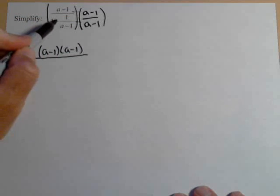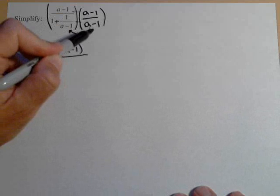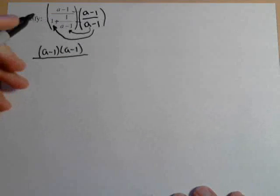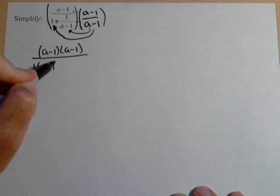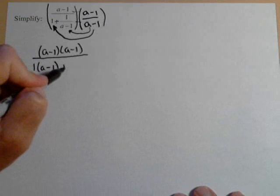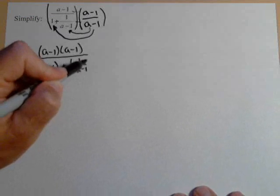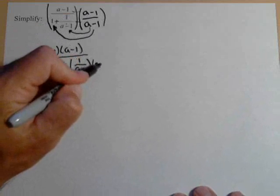On the bottom, you have to be careful. Because of this plus, this a minus 1 must be distributed to both of these. So we're going to have 1 times a minus 1 plus, now here we have the 1 over a minus 1 from the original problem times another a minus 1.